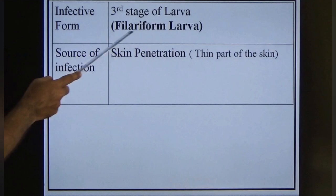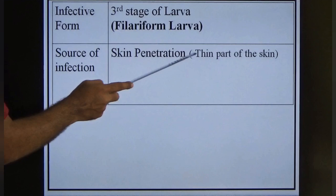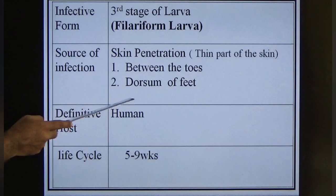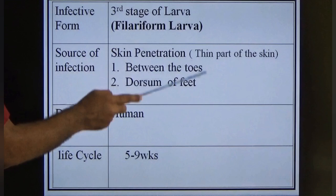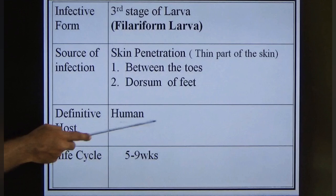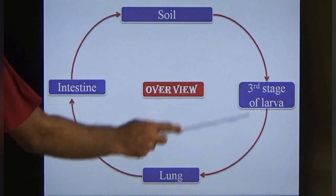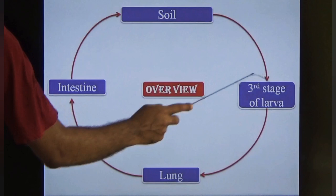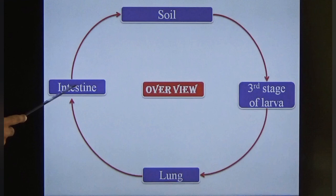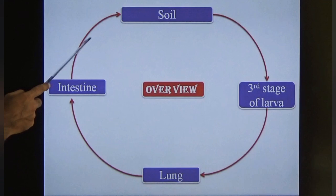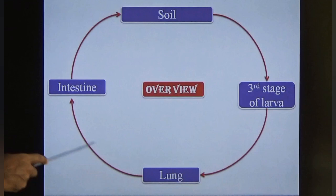The source of infection is skin penetration — the thin skin between the toes and dorsum of the feet is the common site. The definitive host is human. The life cycle is completed in 5–9 weeks. The third-stage larva in soil migrates to the lungs, then to the intestine, becomes an adult worm, which copulates and liberates eggs into the soil.